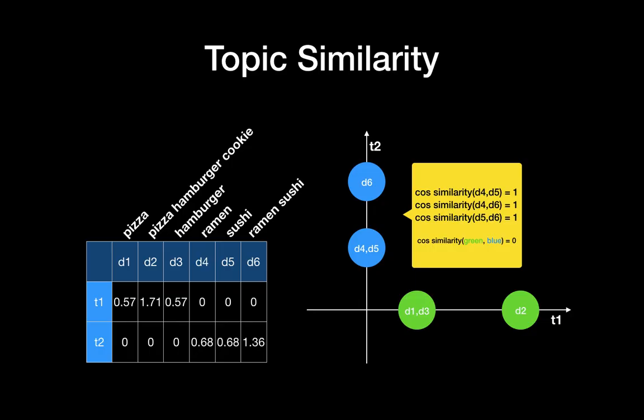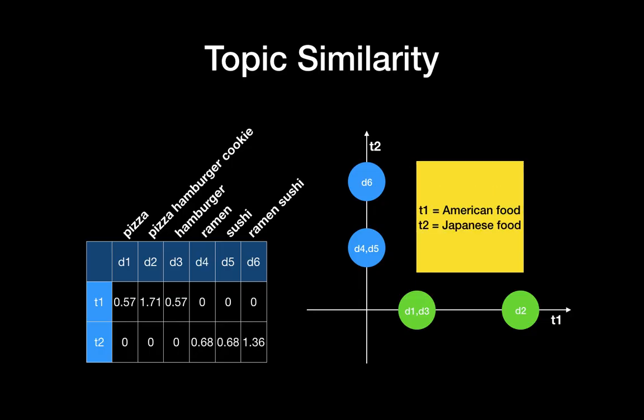Eventually, we know that t1 is American food and topic 2 is Japanese food. The reason why d2 is far away from d1 and d3 is because d2 has pizza, hamburger, and cookie—three American menus. The reason why d6 is far away from d4 and d5 is because d6 has two Japanese foods.